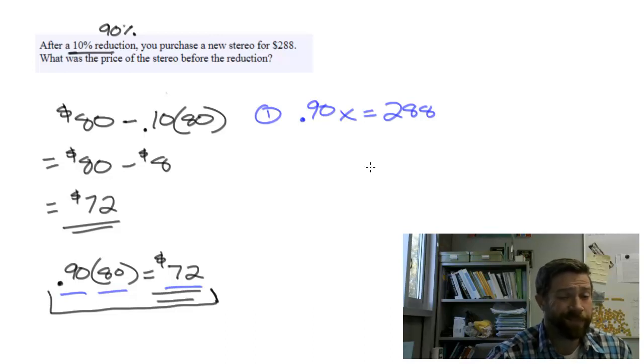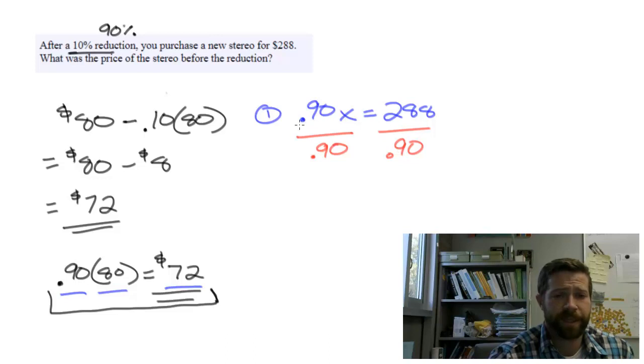This is just a one-step equation, so solving it doesn't take much work. We're going to divide both sides by 0.90 or 90%. If we do that, we'll get x by itself. To get to $288, we took 90% times the original amount, so we divide to undo that 90%.